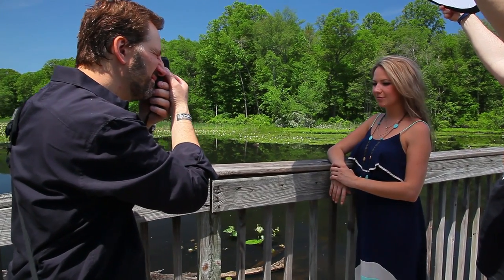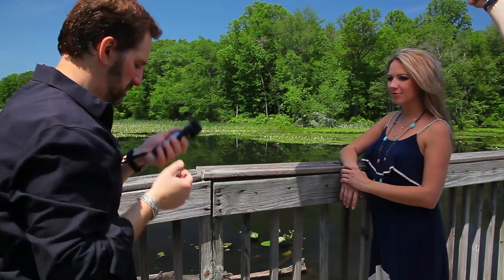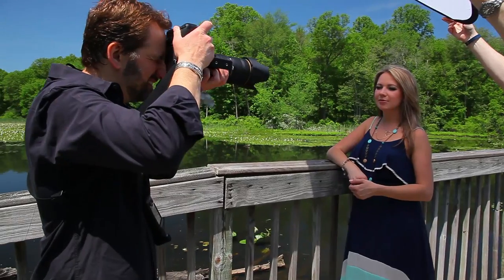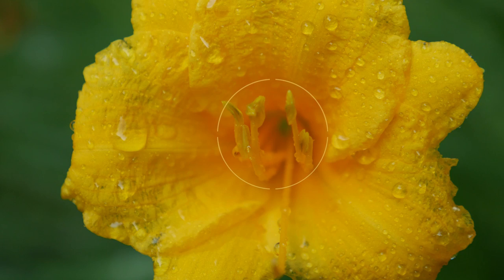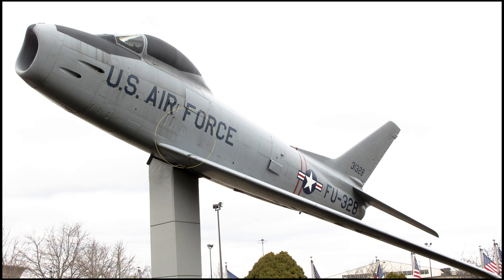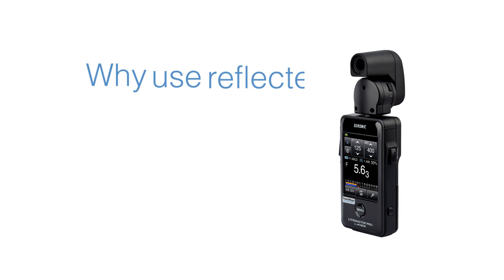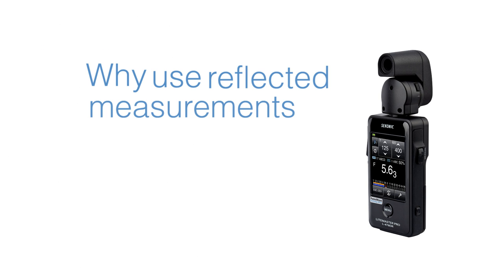Reflective mode measures the light reflecting off the subject and uses the optical spot attachment to measure the light reflecting back to the camera. Unfortunately, reflective measurements can be inaccurate depending on what they are measuring. For example, if we measure a subject with a bright background, the result would be an overexposed background because the meter only measures the subject and not the entire scene.